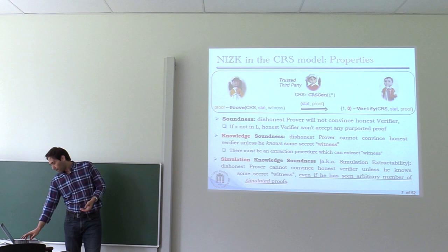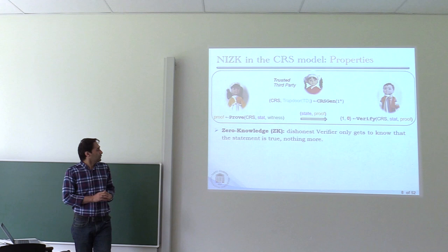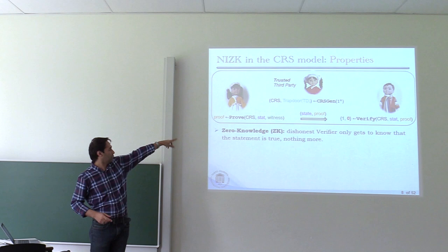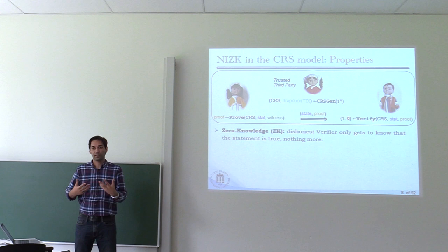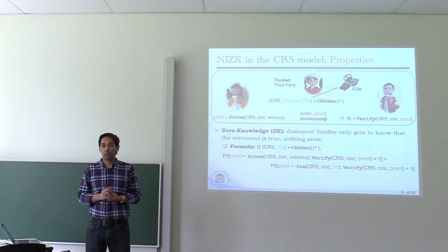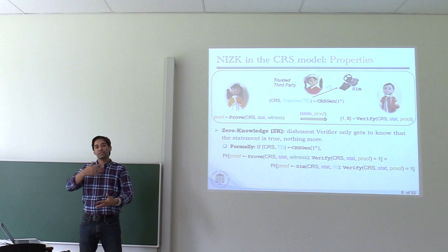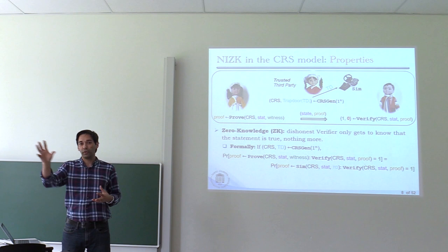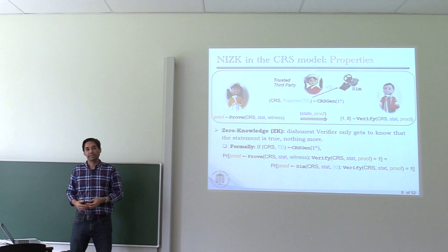The third property is zero-knowledge, which is very important for guaranteeing the privacy of the prover. We say that a dishonest verifier only gets to know that the statement is true — nothing more about the witness that was used. We formalize this concept by showing there exists another algorithm called a simulator that, without the witnesses but with the trapdoors of the common reference system — some secret information about the setup — can produce a proof indistinguishable from the proof the prover generated using witnesses. Basically it guarantees that your proof doesn't depend on the witness.